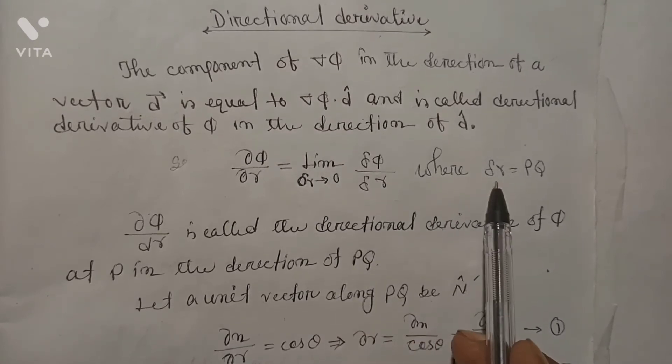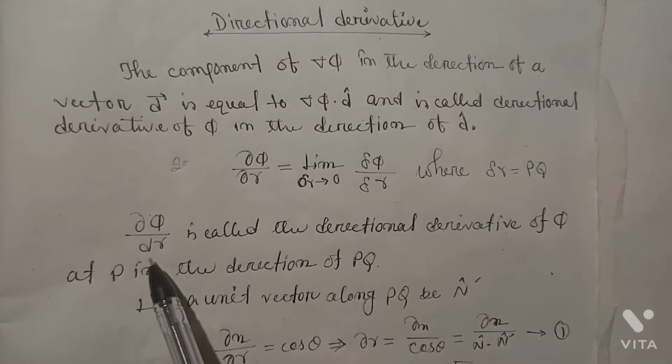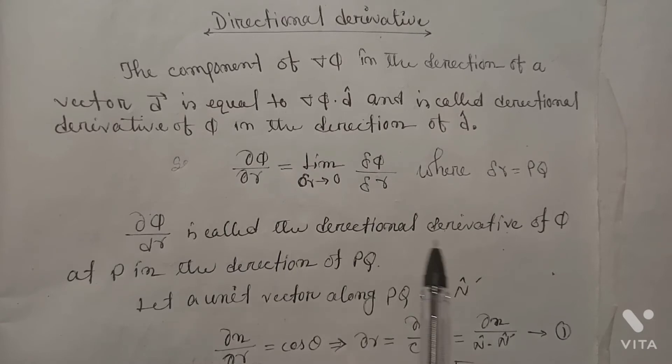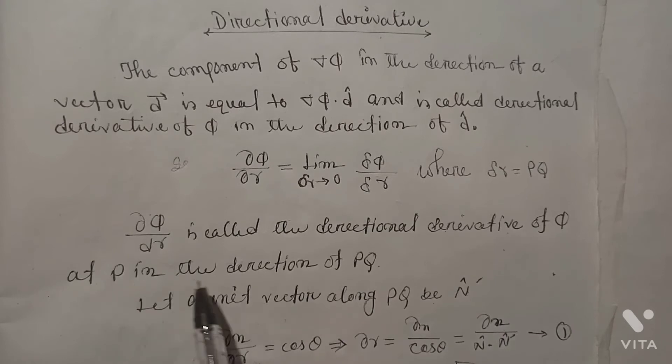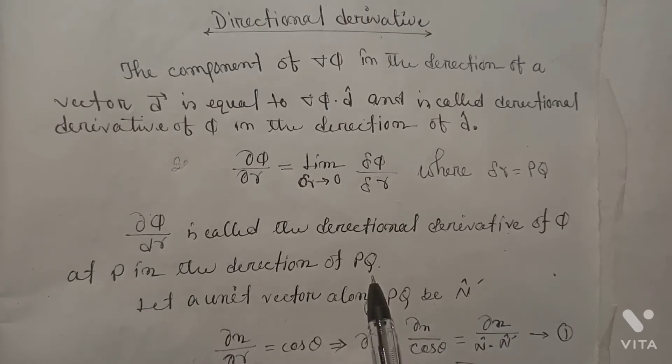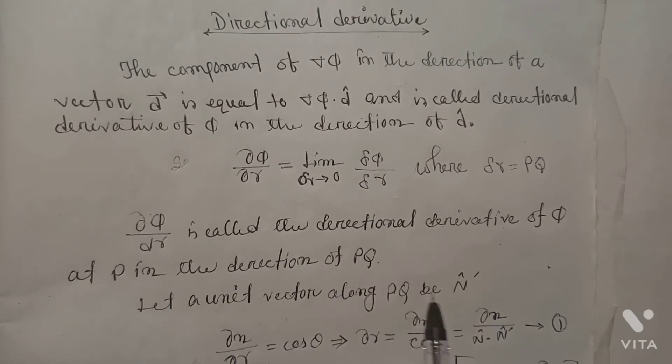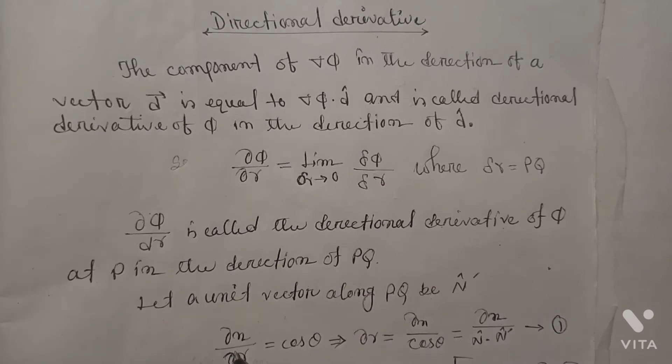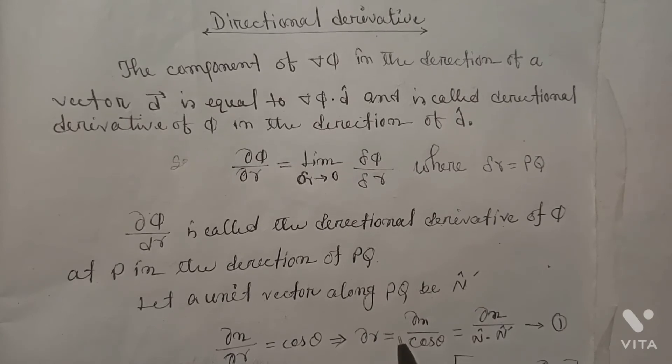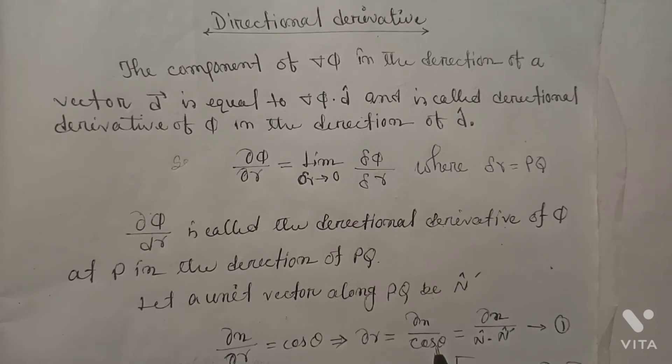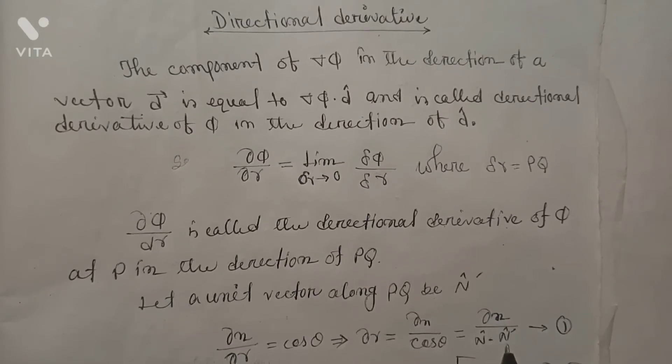Where Δr = PQ. ∂φ/∂r is called the directional derivative of φ at P in the direction of PQ. Let a unit vector along PQ be n̂'. ∂n/∂r = cos θ, which implies Δr = Δn/cos θ = Δn/(n̂ · n̂').